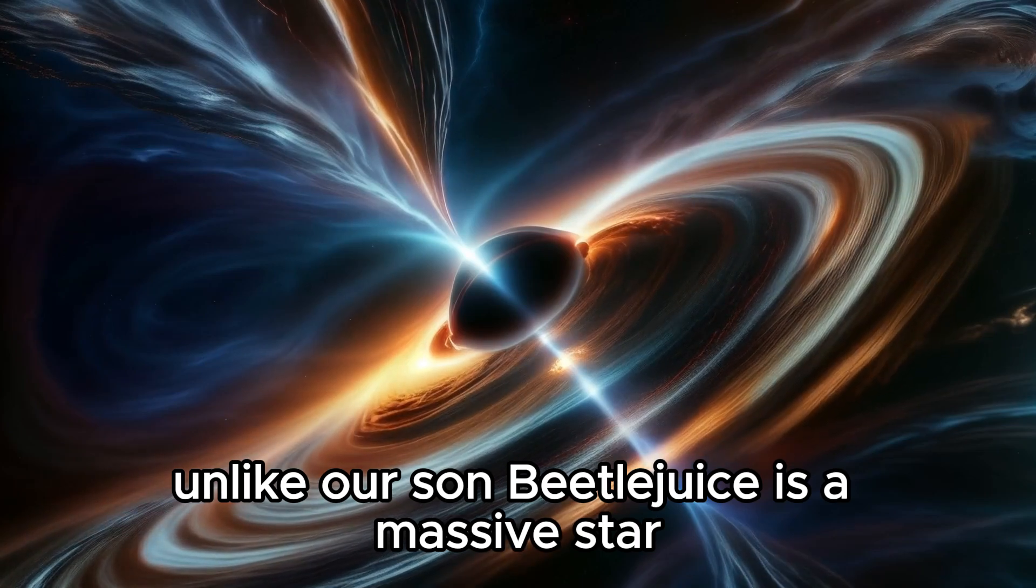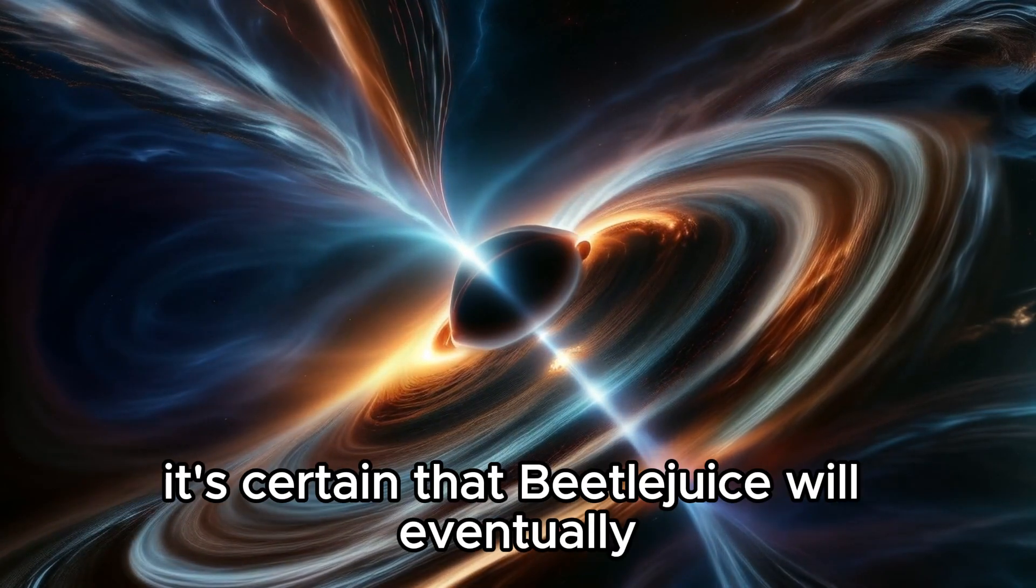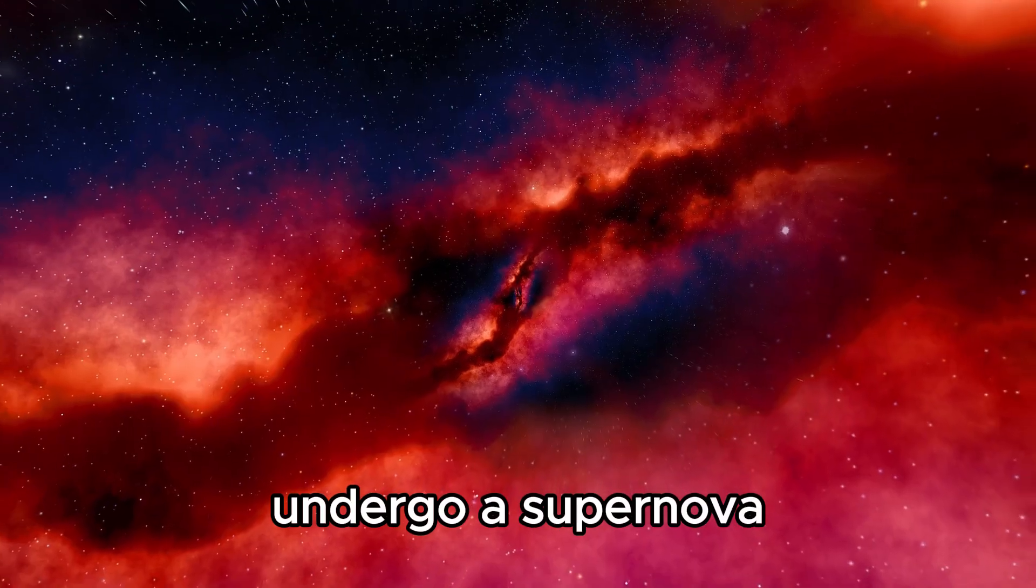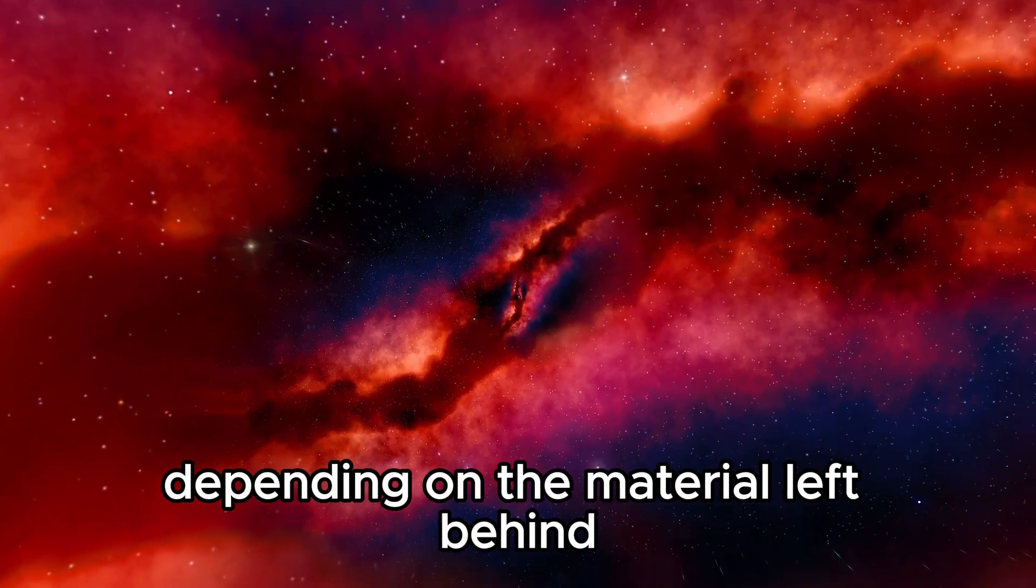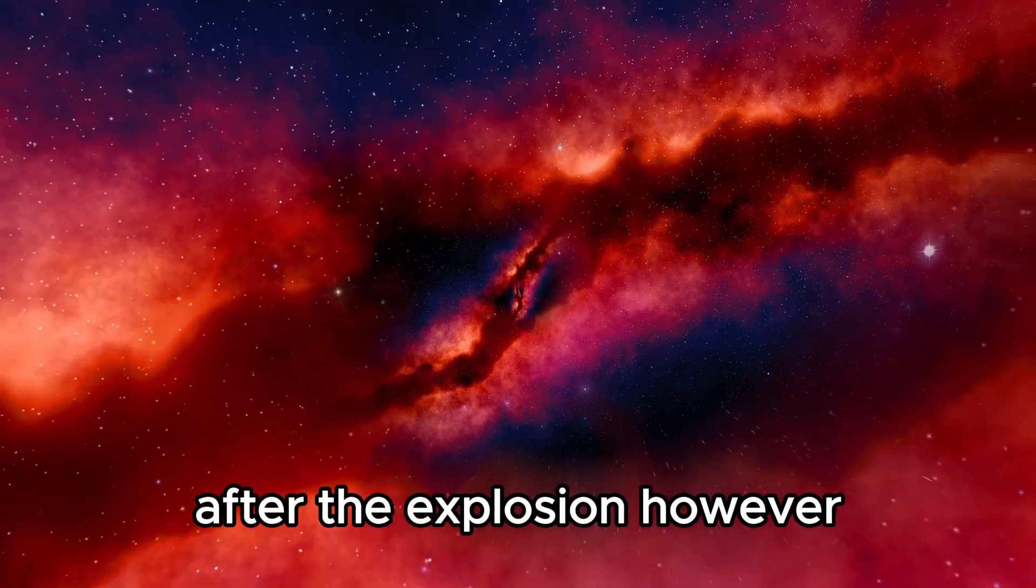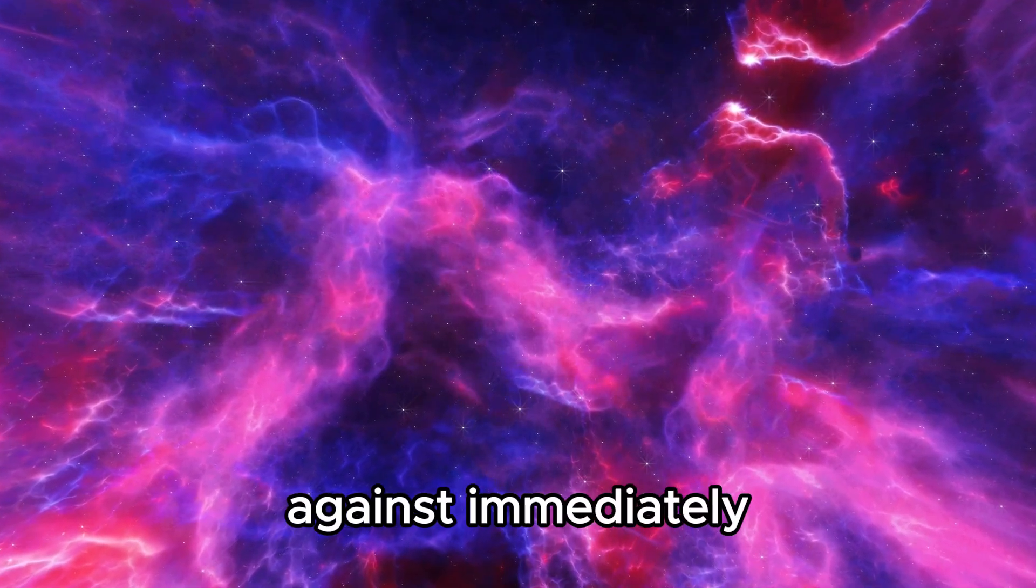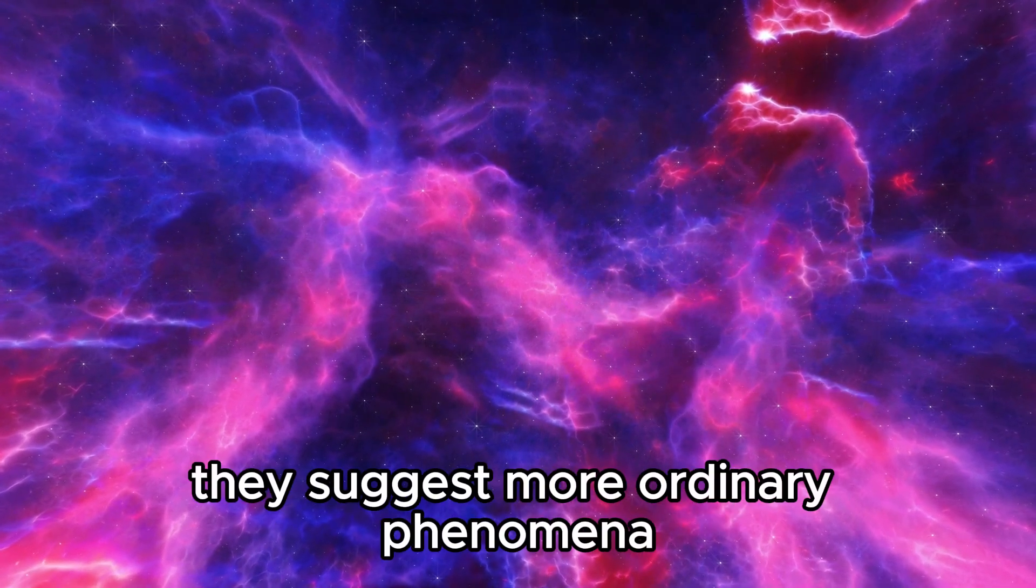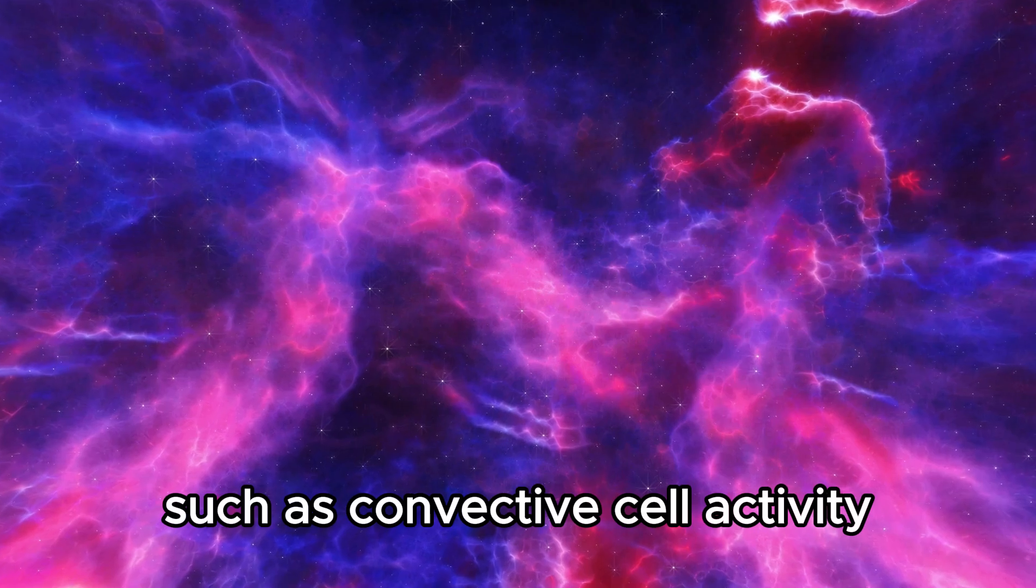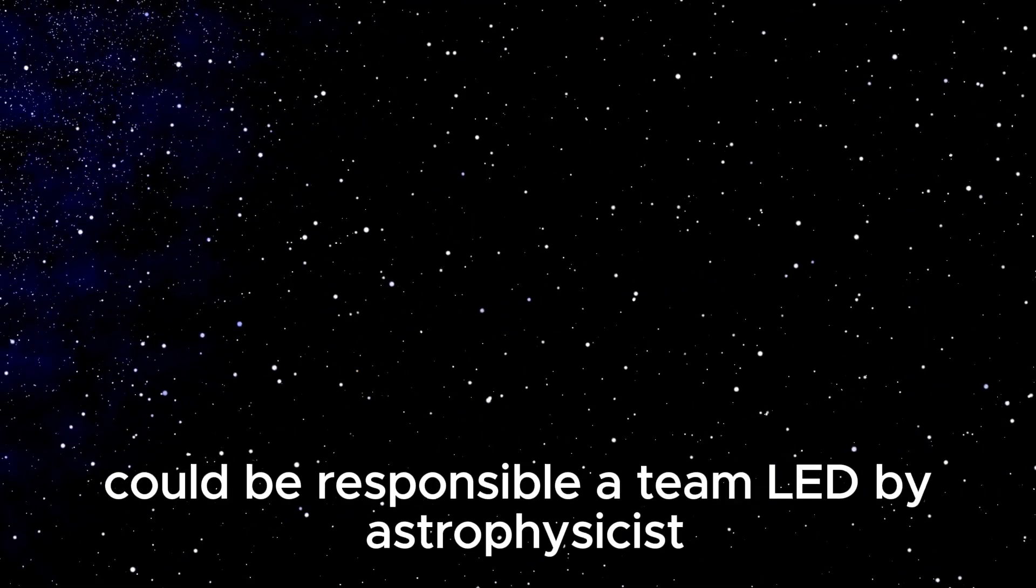Unlike our sun, Betelgeuse is a massive star with a much shorter lifespan. It's certain that Betelgeuse will eventually undergo a supernova, transforming into either a neutron star or a black hole depending on the material left behind after the explosion. However, many astrophysicists caution against immediately attributing the dimming of Betelgeuse to a supernova event. They suggest more ordinary phenomena, such as convective cell activity or the presence of a dust cloud, could be responsible.